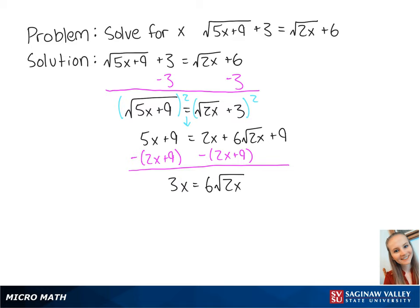Now we can square both sides of the equation to eliminate the radical on the right side, giving us 9x squared is equal to 36 times 2x. If we multiply the right side out, this gives us 9x squared is equal to 72x.